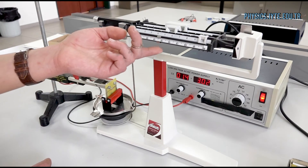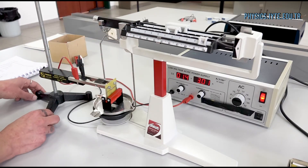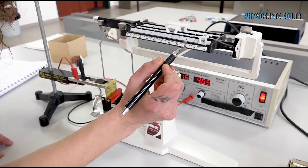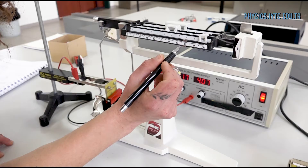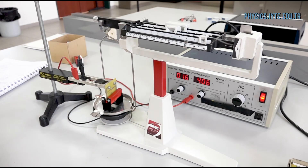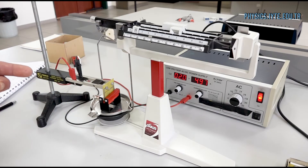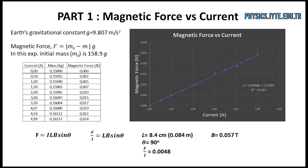After that, the current is set to approximately 3 A and the corresponding mass reading is recorded. Again, the current is set nearly to 4 A and the corresponding mass value on the balance is measured and recorded. Lastly, the current is set to approximately 5 A and the corresponding mass reading is noted. With the data taken, the relation between magnetic force and current is examined using a plot. The theoretical expectation is that the slope of the best-fit line equals the field strength times the length of the wire. Since the wire length is known, field strength can be calculated from the slope.